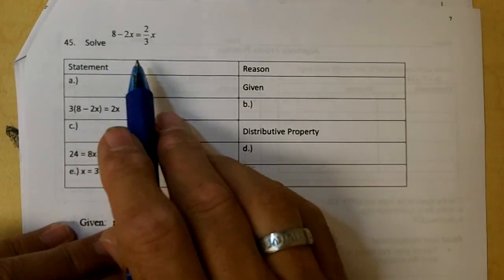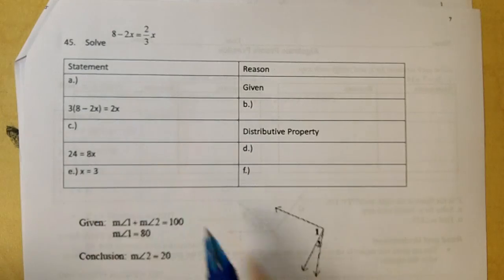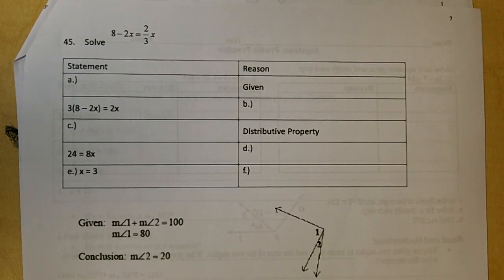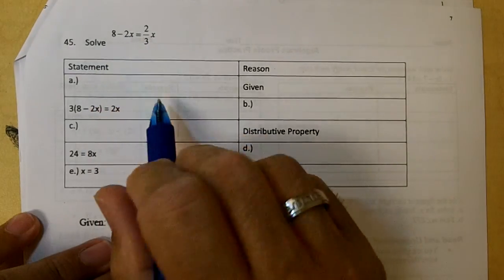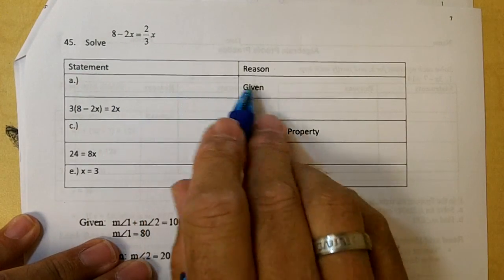On your test, you'll have two algebraic proofs. You'll have two algebraic proofs. Okay, so let's write this down. The first thing you do is write down the problem and write down given.